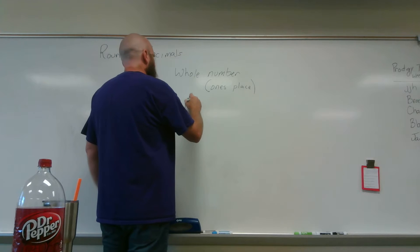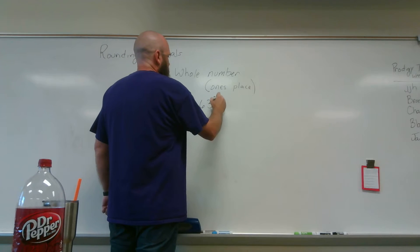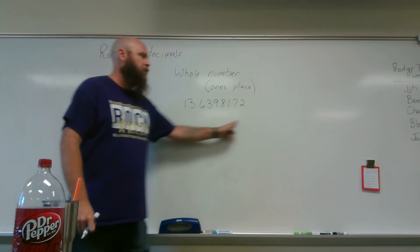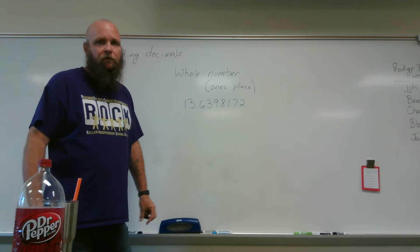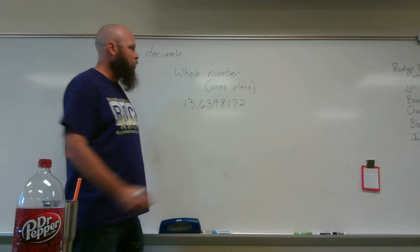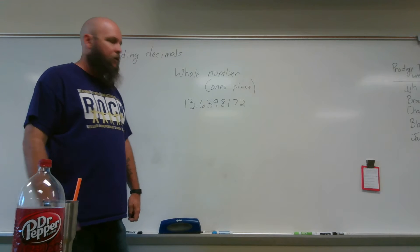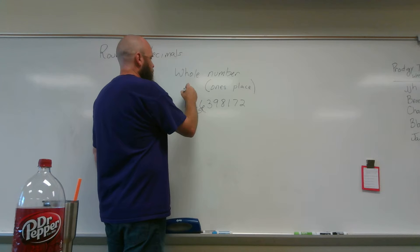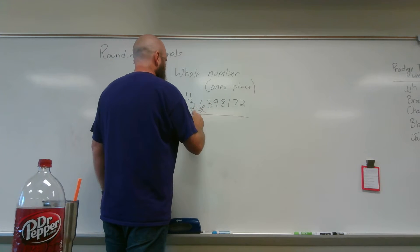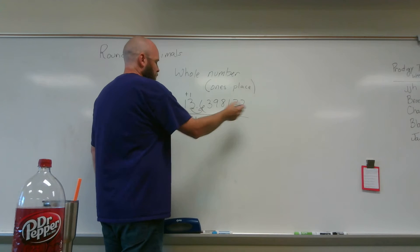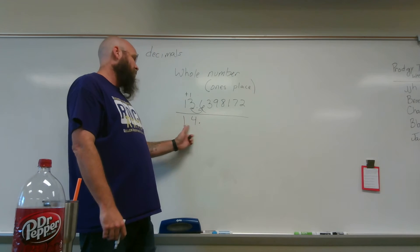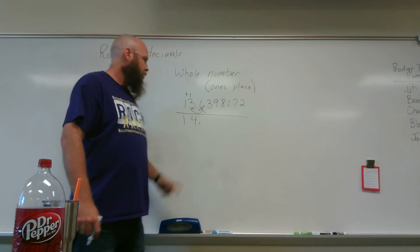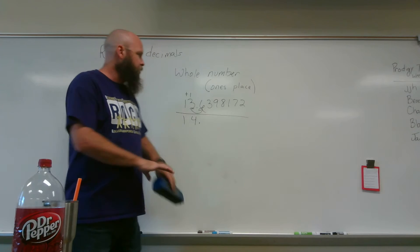It doesn't matter — I could put ninety-eight numbers behind this and it's not going to make it any more difficult. Rounding to the nearest whole number: thirteen's the whole number, so the three is in the ones place. Find our number, look next door — that's five or greater, so we add one more. That becomes a four — fourteen. And all this is going to be zeros. Numbers in front stay the same, numbers behind — zero's your name. Rounds to the nearest whole number: that rounds to fourteen.